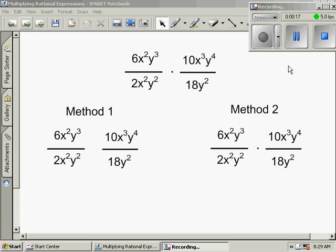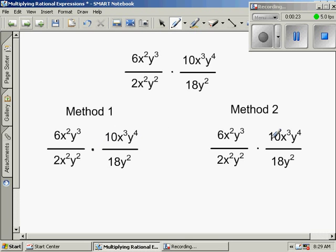The first method is if you want to mark out within the problem, like 6 over 18 would be a 1, 3, 10 over 2 would be 5, and a 1. An x squared on top, a y squared on the bottom, we can't cross that out, but the y cubed we can, so we're going to cross out that and make a y.